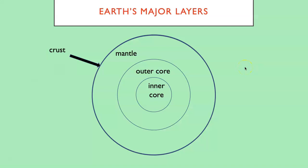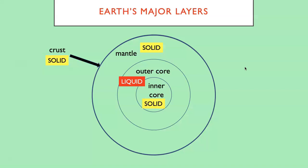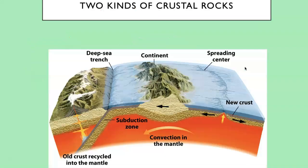It's important to know which layers are solid and which are liquid. The crust we live on is solid rock, and the mantle is also solid. The outer core is liquid — and remember, it's the electrons moving in that outer core that create our magnetic field. The inner core is solid.